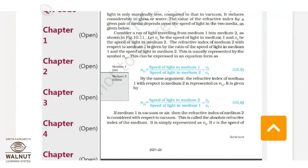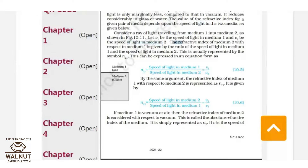The refractive index is denoted by small n. The notation 'two one' means the refractive index of medium two with respect to medium one — it is the ratio of speed of light in medium one to speed of light in medium two. Does everyone understand, or is there any doubt?